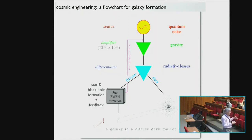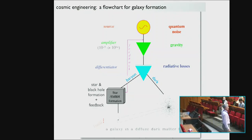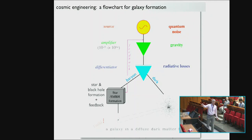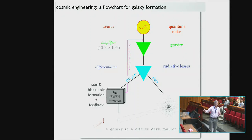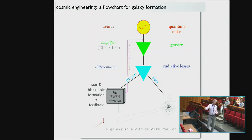Inside the halo, baryons can shock heat, but the medium is typically optically thin and baryons interact with the radiation field. Every time an electron scatters off a proton, a photon is generated and can escape the system, carrying away energy. Over time, the gas cools, pressure support is lost, and it shrinks down into the bottom of the potential well. Then there's the black box — star formation, black hole formation, and feedback. It's becoming grayer — not completely understood, but we're getting better at handling it. At the end you get a little galaxy sitting at the bottom of a dark matter halo.